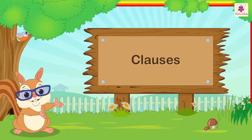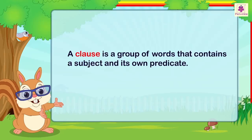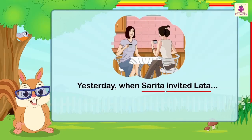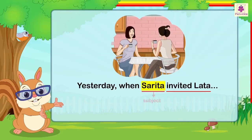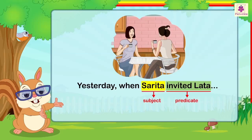Clauses. A clause is a group of words that contains a subject and its own predicate. For example, yesterday, when Sarita invited Lata — in the underlined clause, Sarita is the subject and invited Lata is the predicate. A predicate consists of a verb or a verb phrase and the rest of the sentence.